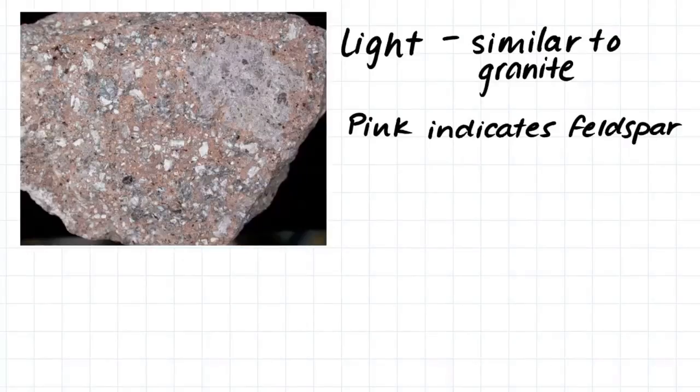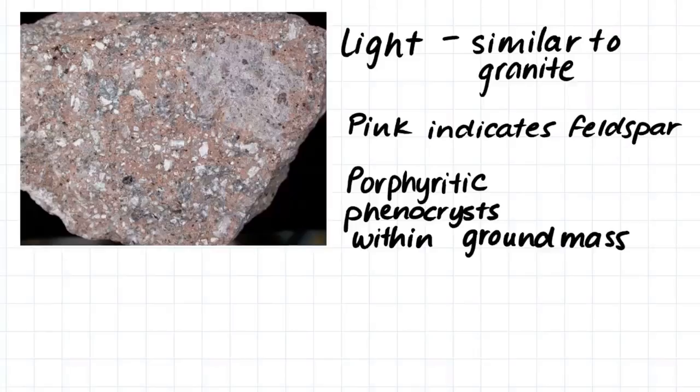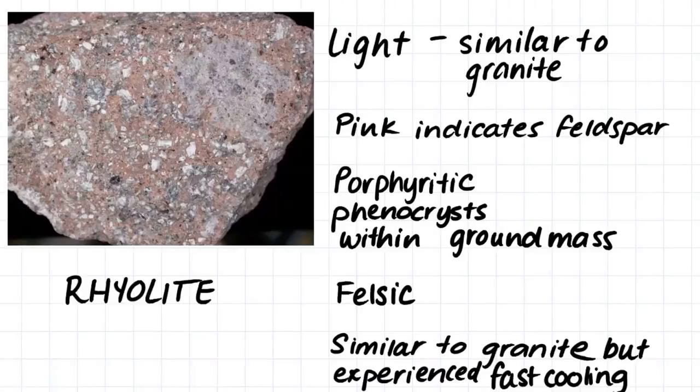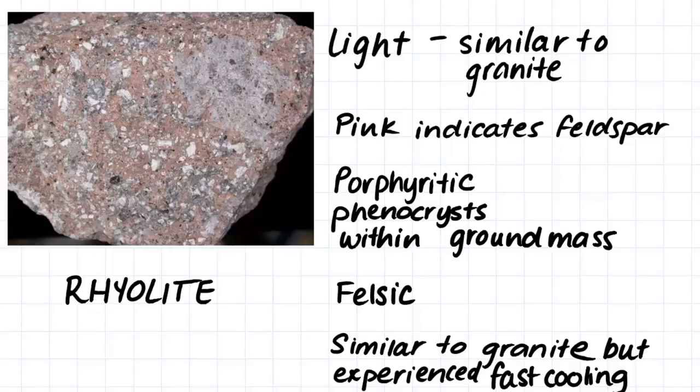This sample is similar to the granite as it is quite light in color and the pink coloring of the crystals indicates that it contains feldspar minerals. I would say that this sample is porphyritic as it contains phenocryst crystals within a groundmass. I would say that this rock is felsic and therefore is rhyolite. This sample is very similar to granite in its chemical composition, however it has experienced fast cooling at some point in its cooling history.